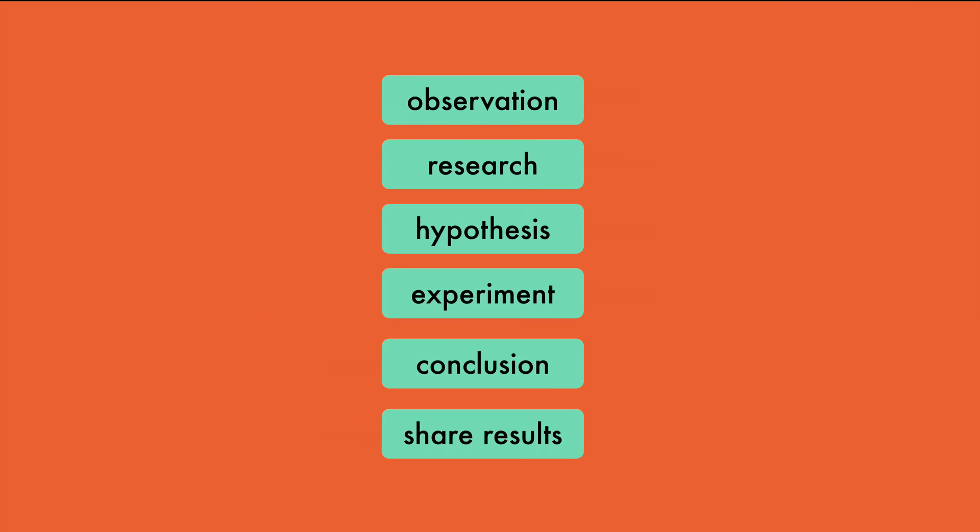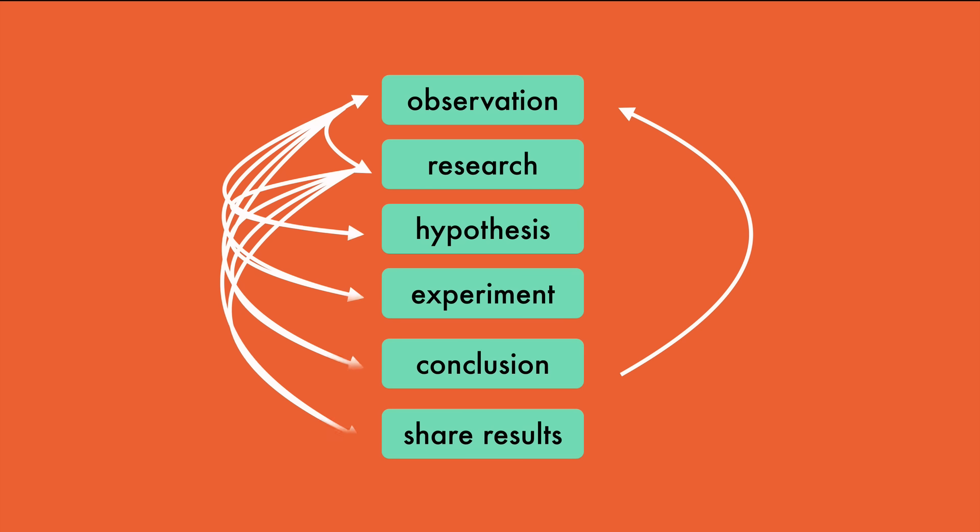These are the steps of the Scientific Method. And at any step, you can go back and repeat the process. Typically, after you conduct an experiment and conclude that your results aren't answering the question, you go back and try something else. And really, truly, observations and research are going on the entire time. Science is a continually ongoing process.